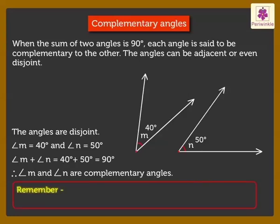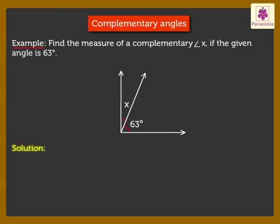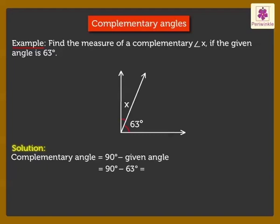Kids, remember: to find the measure of a complementary angle, we use the formula — Complementary angle is equal to 90 degrees minus the given angle. Now, let's solve an example. Find the measure of complementary angle X if the given angle is 63 degrees. We use the formula: 90 degrees minus 63 degrees is equal to 27 degrees. Therefore, angle X measures 27 degrees.